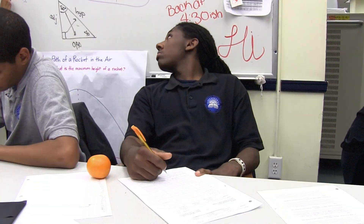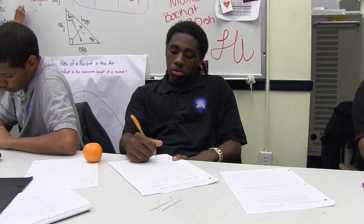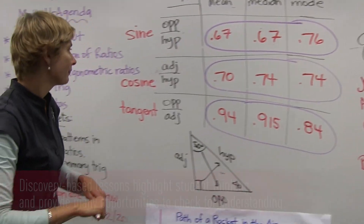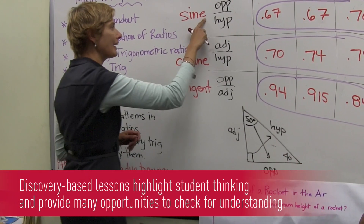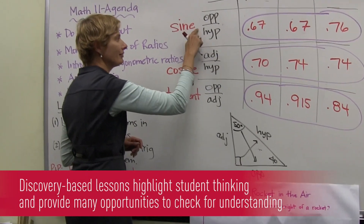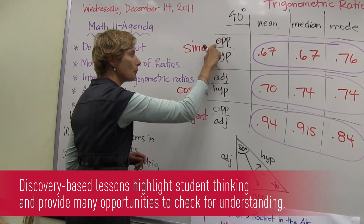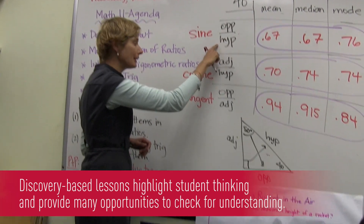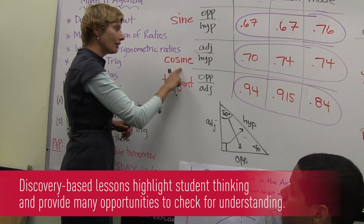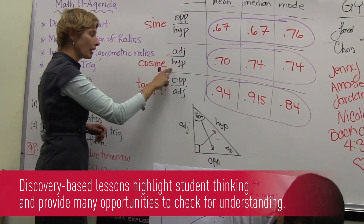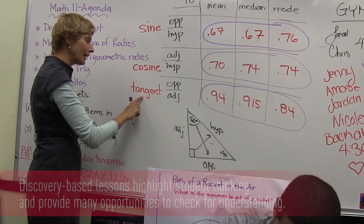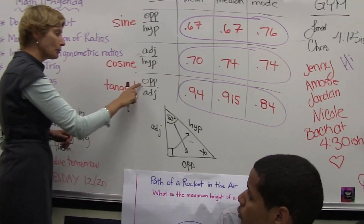Without naming it, kids were exploring the ratios and sizes of right triangles — they were actually deriving the trig ratios: sine, cosine, and tangent. Sine of an angle is defined as opposite over hypotenuse. Cosine of an angle is the adjacent over hypotenuse. And tangent of an angle is opposite over adjacent.